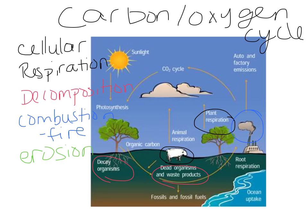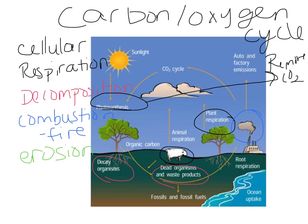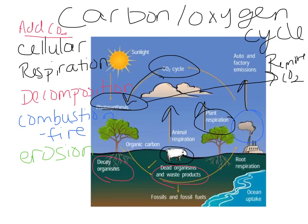Remember the only thing that does not release carbon into the atmosphere — that actually removes it from the atmosphere — is photosynthesis. Photosynthesis is the only thing that removes CO2 from the atmosphere. All of these other things add CO2 to the atmosphere. As it's cycling through, atmospheric CO2 is pulled out through photosynthesis, and then as organisms do respiration, as they die and decay, as fossil fuels are burned, as erosion occurs, all of that returns the CO2 back to the atmosphere.